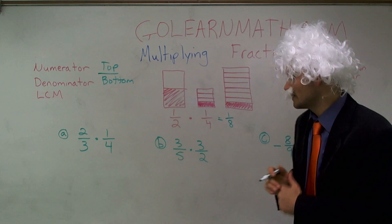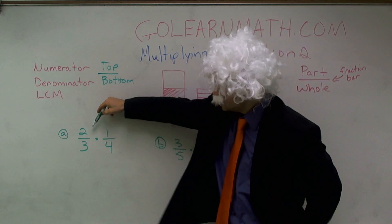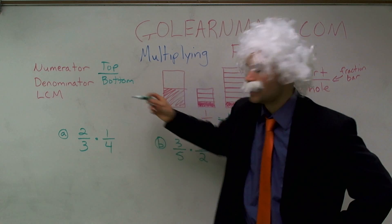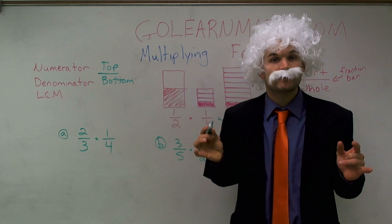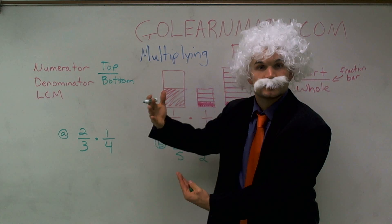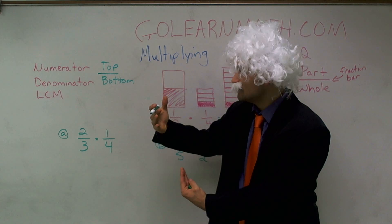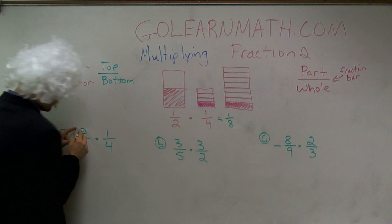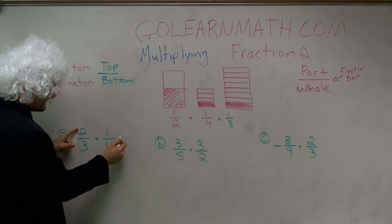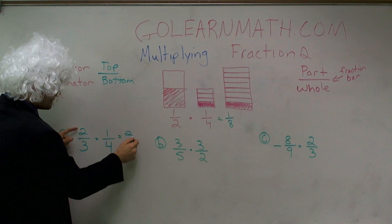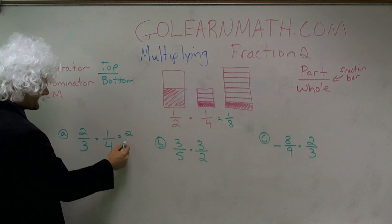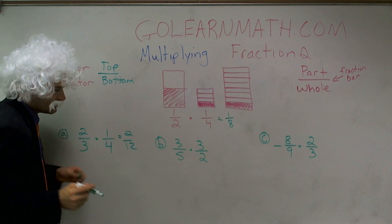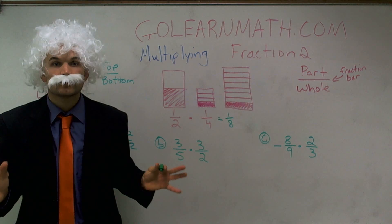Let's go through a couple of examples quickly. We have two-thirds times one-fourth. Remember, to multiply fractions just multiply across: two times one equals two, and three times four equals twelve.